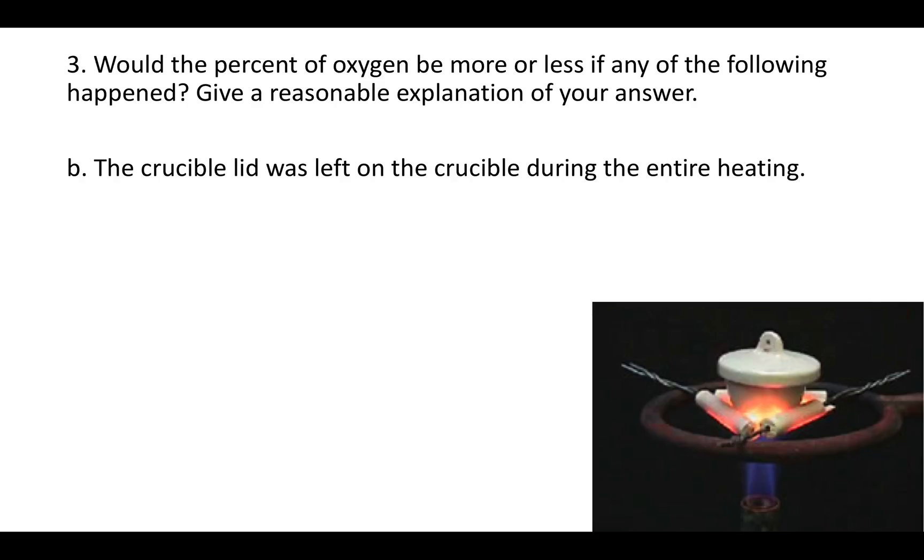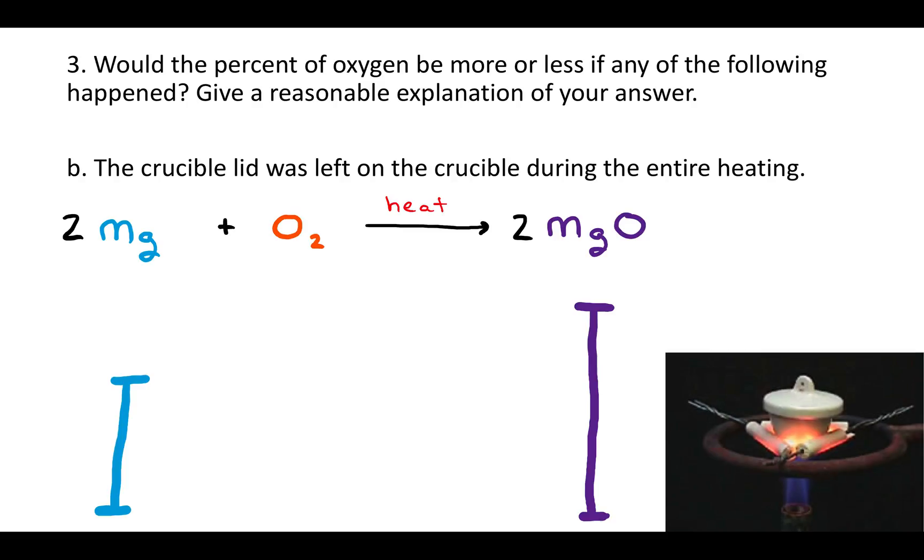B says the crucible lid was left on the crucible during the entire heating. Now again, we have magnesium reacting with oxygen to give us magnesium oxide. Oxygen is coming from the air. But if you have a lid on the crucible, it's not letting as much oxygen in. And so no matter how much you heat the magnesium up, if there's no oxygen available, not all of it will turn into magnesium oxide. And so the amount that you get at the end is going to be smaller. What does that tell you about the percent of oxygen? Is that bigger or smaller than it would have been in the original scenario where you didn't leave the crucible lid on for the whole experiment?